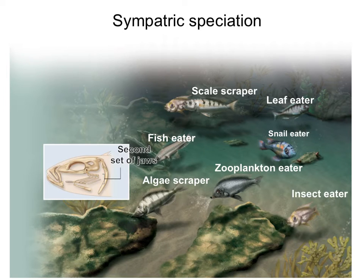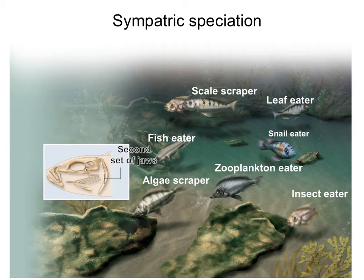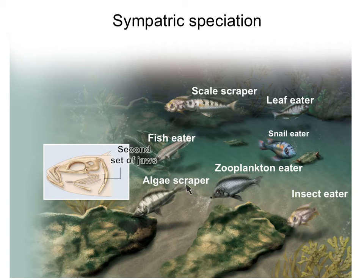Some cichlids even specialize in scraping scales off other fish. Each type of feeding requires a specialized set of jaws. As they become more and more specialized on their feeding source, they become different from each other. It also becomes advantageous to breed only with those that have the same morphology, so their offspring will be equally specialized on that food resource. If a zooplankton eater were to mate with an algal scraper, their offspring won't be good at eating either algae or zooplankton — so they should breed only with those of the same trait.